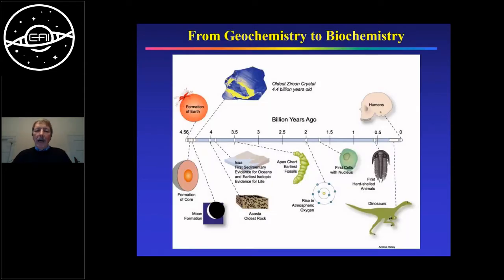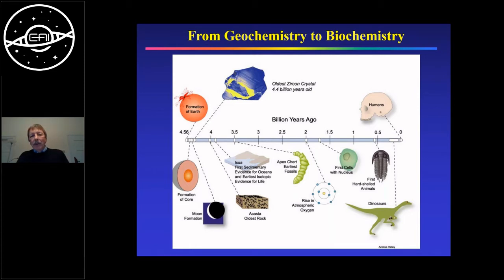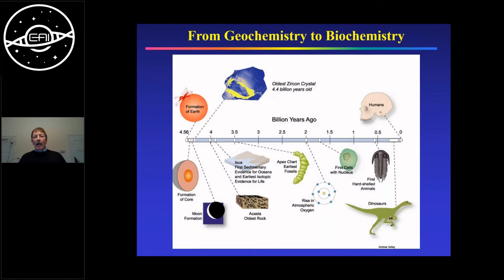What we really want to know is how the transition works from geochemistry to biochemistry. Just as a reminder, the Earth has an age of 4.56 billion years. Shortly after the formation of the Earth, we had another event — the formation of the Moon — and only after that can we expect that life formed. The oldest zircon crystals we have on Earth have been dated up to 4.4 billion years ago, and investigation of oxygen isotopes indicated that we may have had a hydrosphere already around 4 billion years ago — also the time we think the transition from geochemistry to biochemistry occurred.